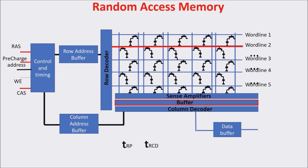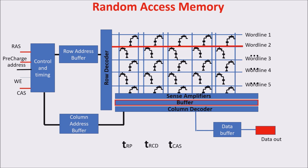When the column or CAS signal arrives, you need some time to have the data on the output ready for the CPU — this is called the CAS delay. So if you are in the wrong row and want to read a bit in another row, you need a total time equal to the sum of TRP, TRCD, and TCAS before having the data on the output ready for the CPU.